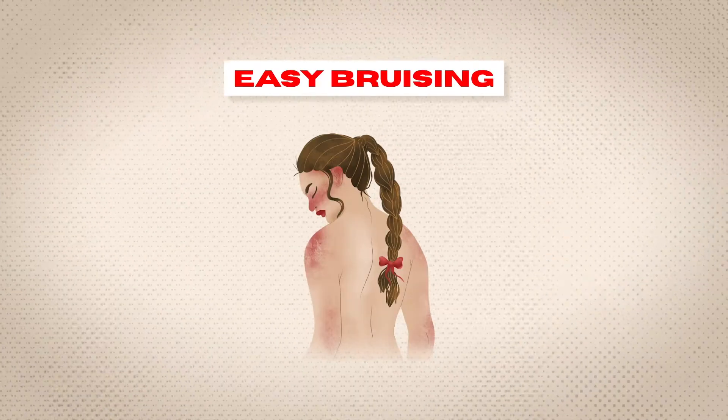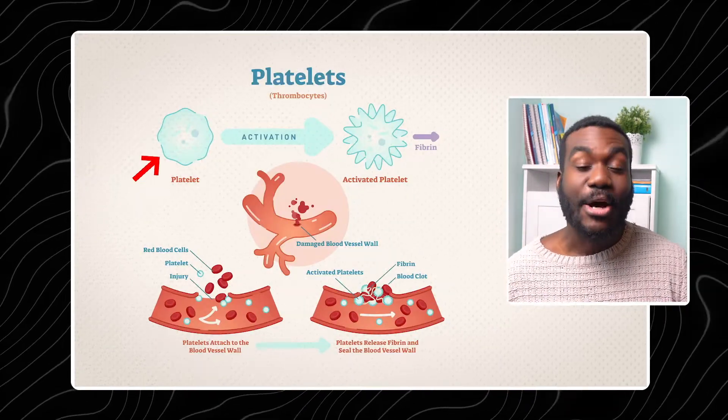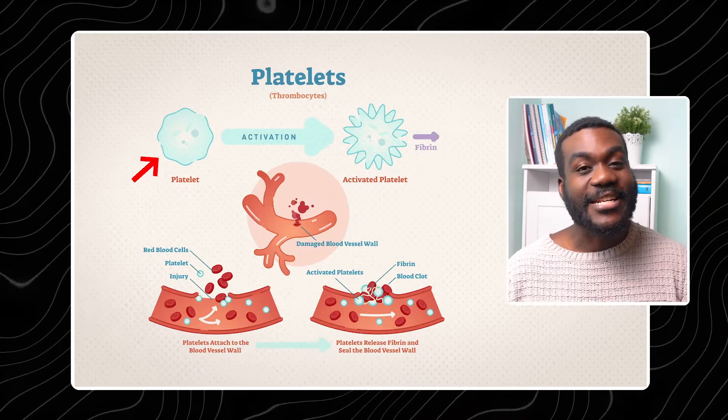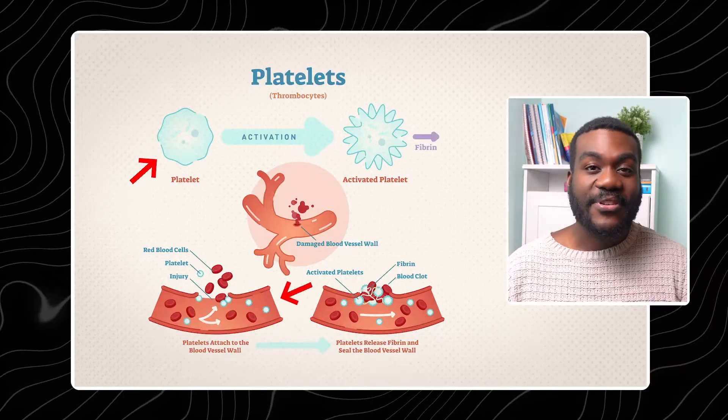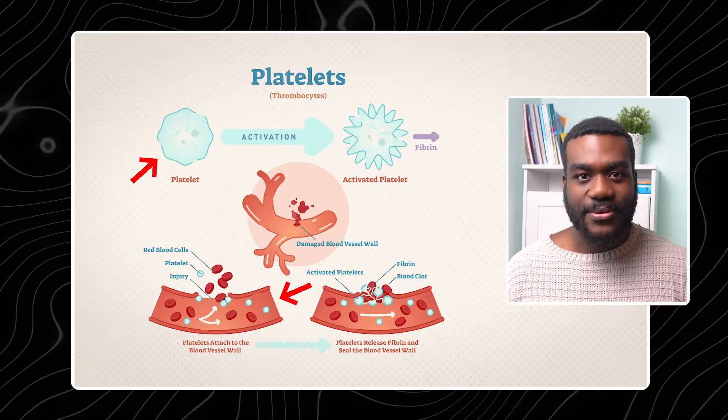Next up on our list is easy bruising. Easy bruising happens because when the liver's function is drastically reduced, it's unable to produce platelets. Platelets are essential for blood clotting. In addition to not having enough platelets, liver damage also affects the health of the blood vessels, which is why significant liver damage means you bruise a lot more easily.